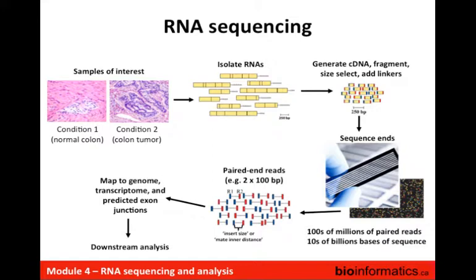When you analyze this data, you'll have two sets of reads — one file will correspond to all of the read ones and one file will correspond to all of the read twos — and in each case those will match up. So you'll have one read for the first part of a fragment and one read for the second part of that fragment for every fragment.